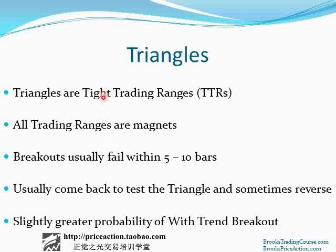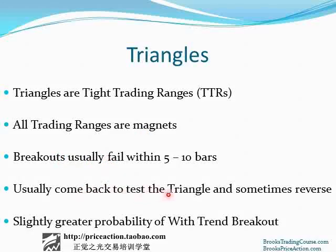Triangles are a type of tight trading range — a trading range where the high to the bottom of the range is very tight and there are multiple reversals in it. Like all trading ranges, a triangle is a magnet, so they're very often final flags. In other words, the breakout usually fails within five or ten bars, the breakout in either direction, and the market usually comes back to test the triangle and sometimes even reverses.